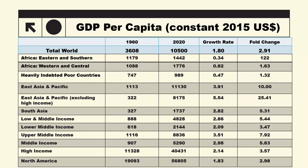Overall, let's talk about the world. In 1960, per capita GDP was 3,608 USD, and in 2020 it was 10,500 USD. So in 61 years, the growth rate is 1.8%. The per capita GDP has almost tripled — approximately 2.91 times the original value.